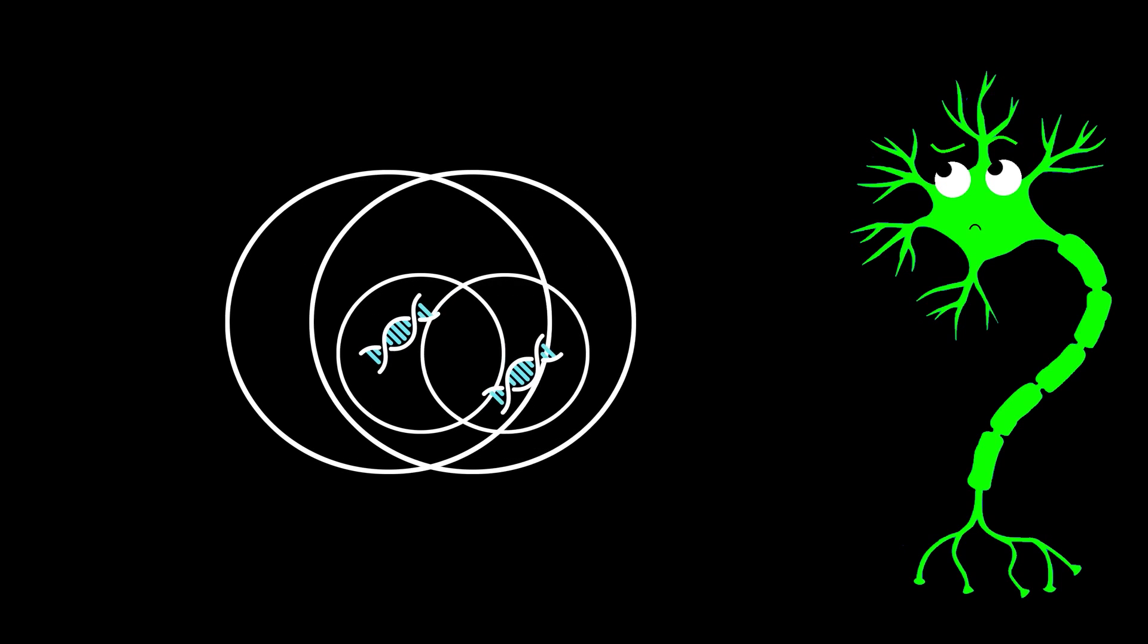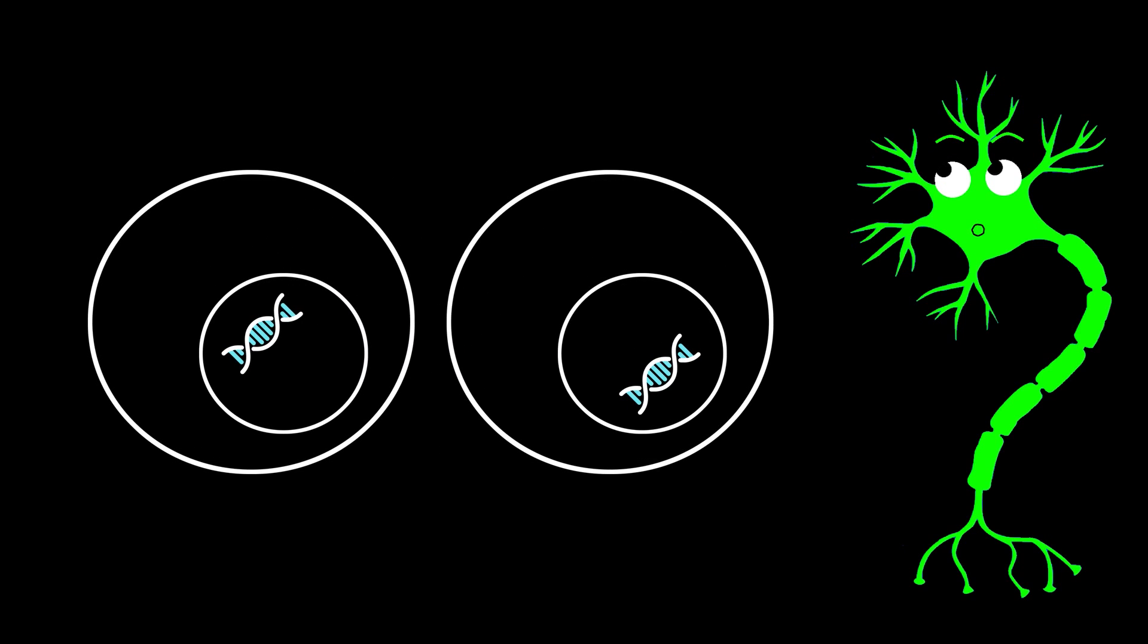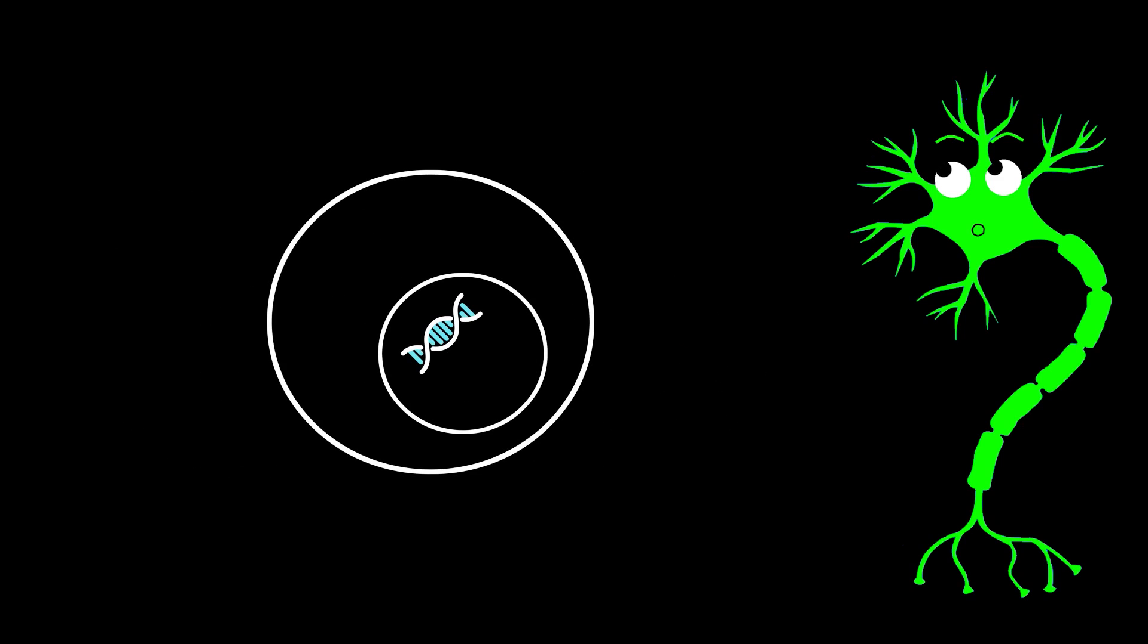The answer is simple. Right before dividing, the original cell simply makes a copy of all its DNA so that it has two copies ready, one for each daughter cell. This process is appropriately called DNA replication.